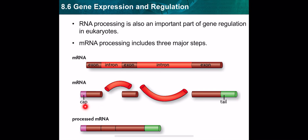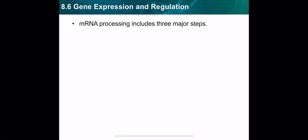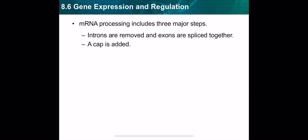After mRNA processing, the processed mRNA leaves the nucleus and goes to the cytoplasm to start the translation process. To summarize, the three major steps in processing mRNA are: number one, introns are removed and exons are spliced together; number two, a cap is added; and number three, a tail is added.